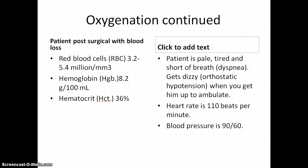Another example of a lab value for the oxygenation unit is your surgical patient that had blood loss. With blood loss they have a lower hemoglobin, hematocrit, and red blood cell count. Your patient is usually pale because they don't have red blood cells giving them color. They're tired because red blood cells carry oxygen out to all the tissues and they're not getting enough oxygen to where they need it. They're short of breath or dyspneic because the body can't keep up with oxygen demands.